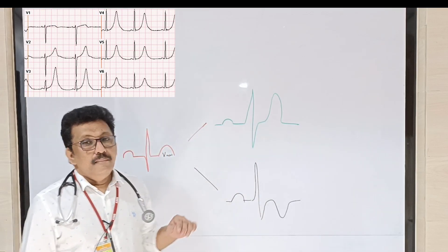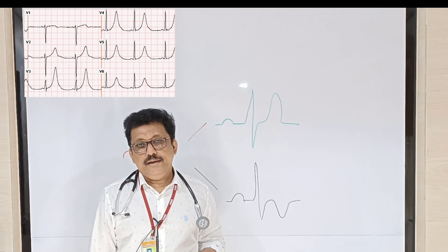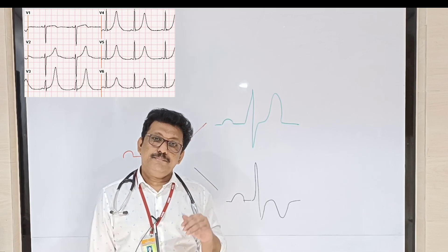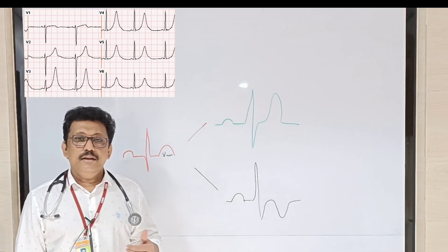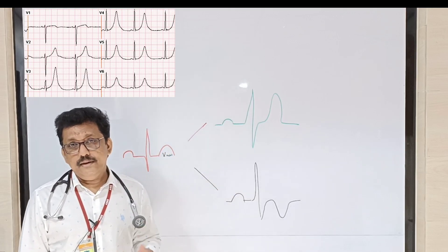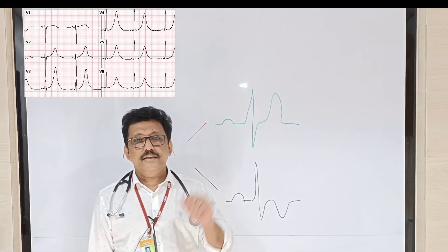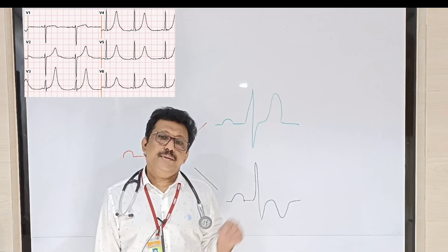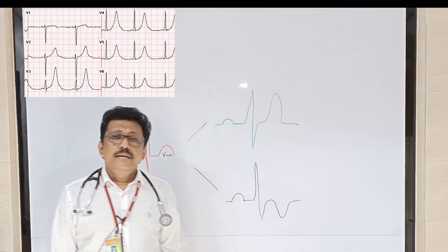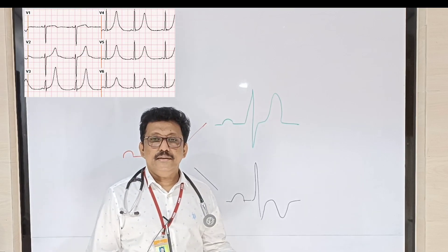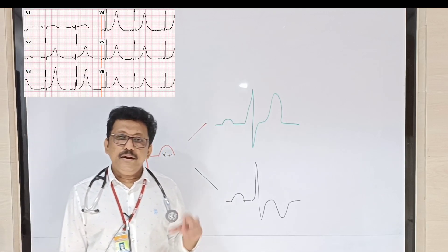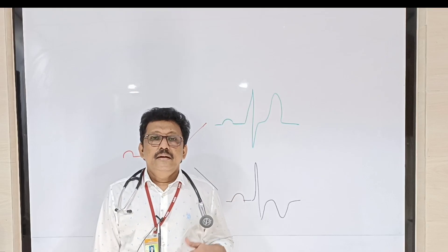If a patient comes in with acute chest pain and we see tall T waves only in V1, V2, V3, V4, then it is an anterior septal MI hyperacute change. Tall T waves in inferior leads with severe chest pain are mostly hyperacute inferior wall MI. We ask for cardiac enzymes — if elevated, it is mostly MI. So tall T waves can be due to hyperkalemia seen in all leads, or hyperacute MI seen only in selected leads.